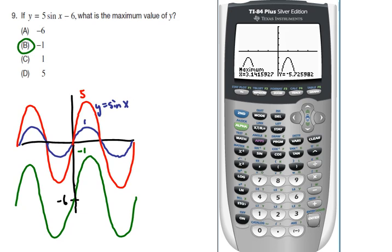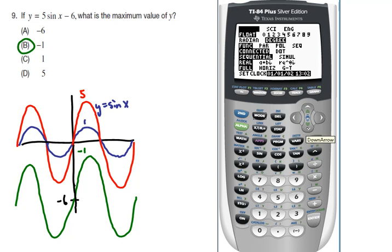So if I go to mode, you should see that I'm in degree mode. You have to be really careful on this, especially on a test like this, which could go back and forth.